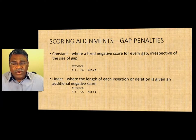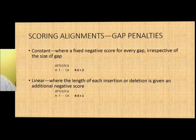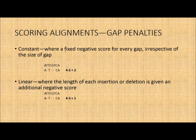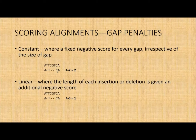So what are the different ways you can score gaps? One is called the constant score, where you say that if you have a gap, no matter how long it is — irrespective of the size of the gap — you just give it a negative score. For example, if I had two sequences, ATTCGTCA and something smaller, and I want to align them, I put a gap here and a gap here, but for my CA to match, I have to put essentially three gaps.